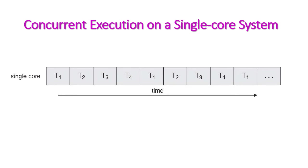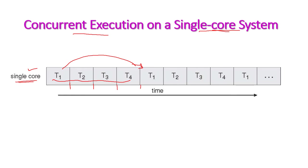This diagram explains the concurrent execution on a single-core system. Here we have only one core but four different threads. All threads share the single core by receiving a time slice each. Task 1 executes first, then task 2, task 3, task 4, and then task 1 again — this cycle continues until all tasks are completed.